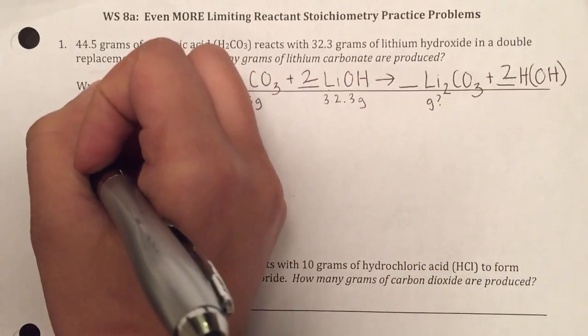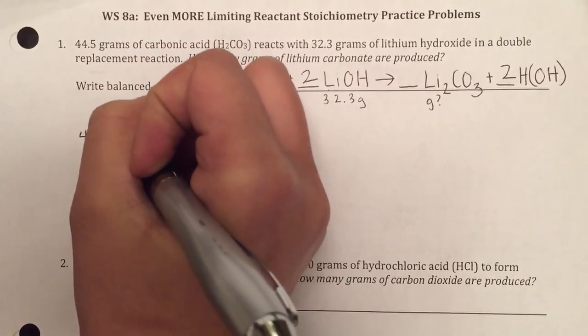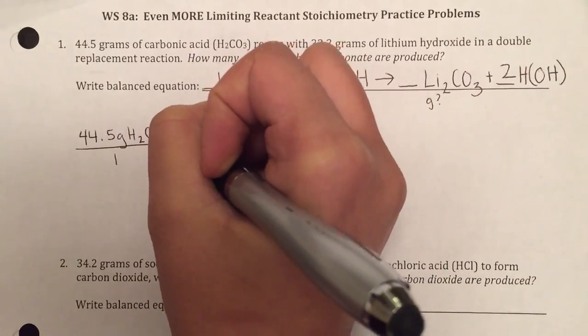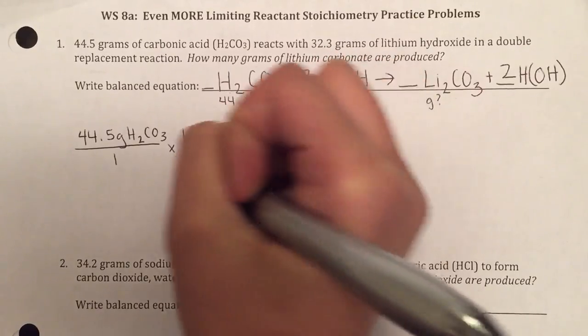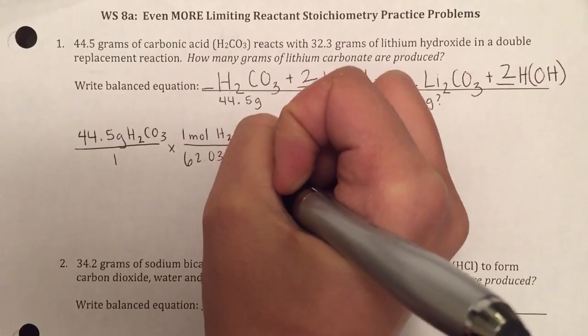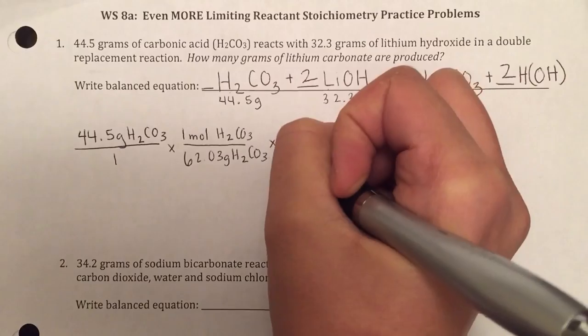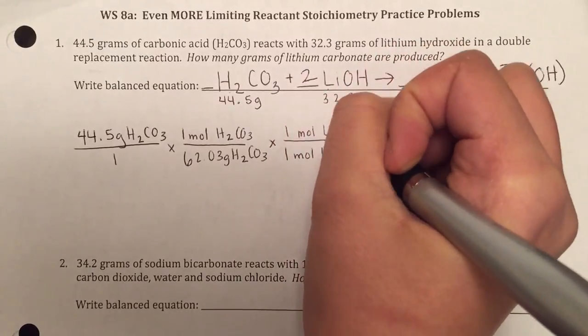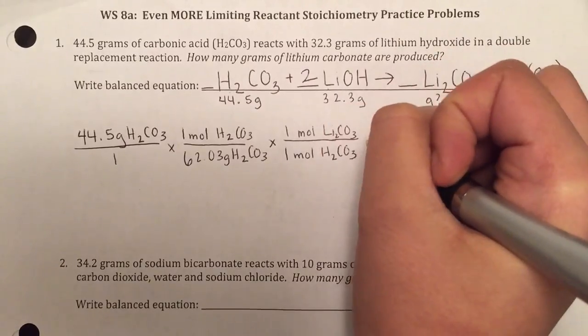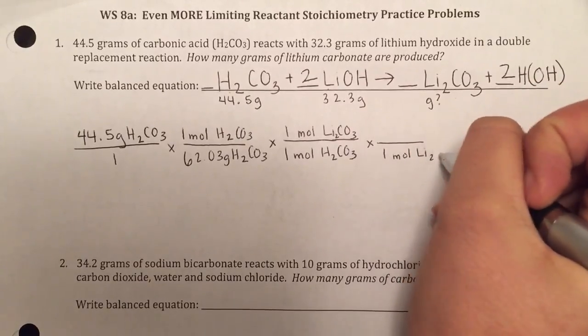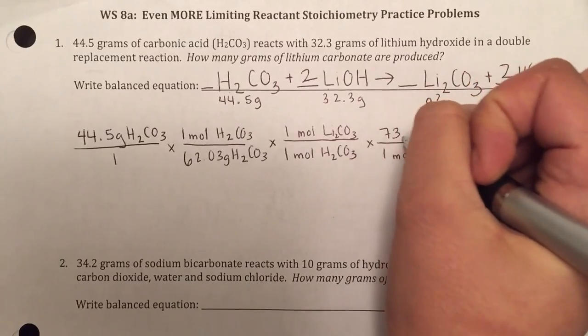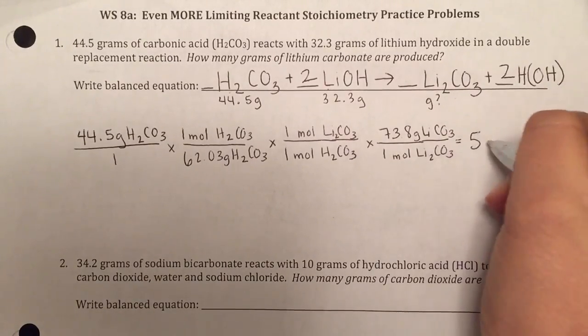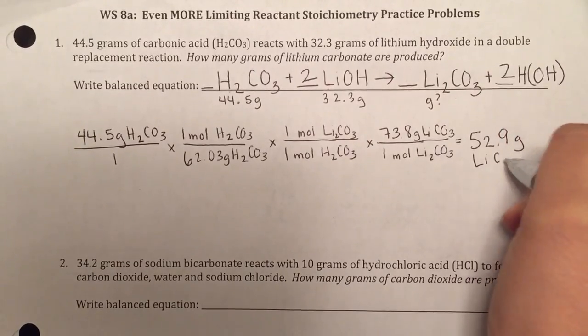I'm going to set up my first one. I'm going to take my carbonic acid amount, put it over 1, convert that into moles. Then use my mole ratio. And then go back to grams of lithium carbonate. So if I do this, I will find that I produce 52.9 grams of lithium carbonate.